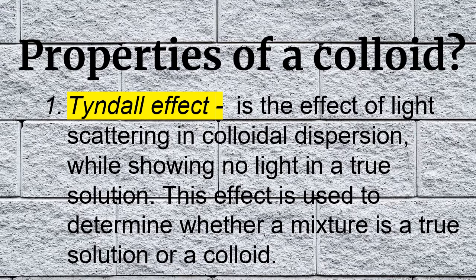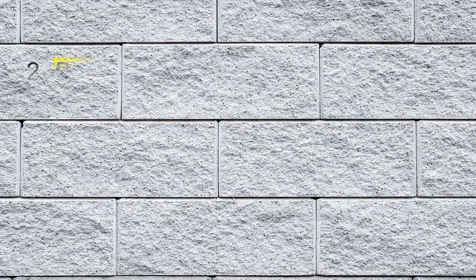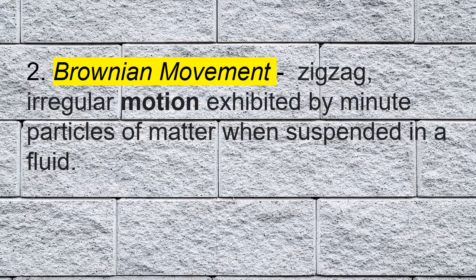Colloids have properties. The first is the Tyndall effect. The Tyndall effect is the scattering of light in a colloidal dispersion while showing no light scattering in a true solution. This effect is used to determine whether a mixture is a true solution or a colloid. If you shine light through a true solution you will not see the beam of light because it is transparent, while in a mixture of water and milk, which is a colloid, the beam of light is visible and the light is scattered.